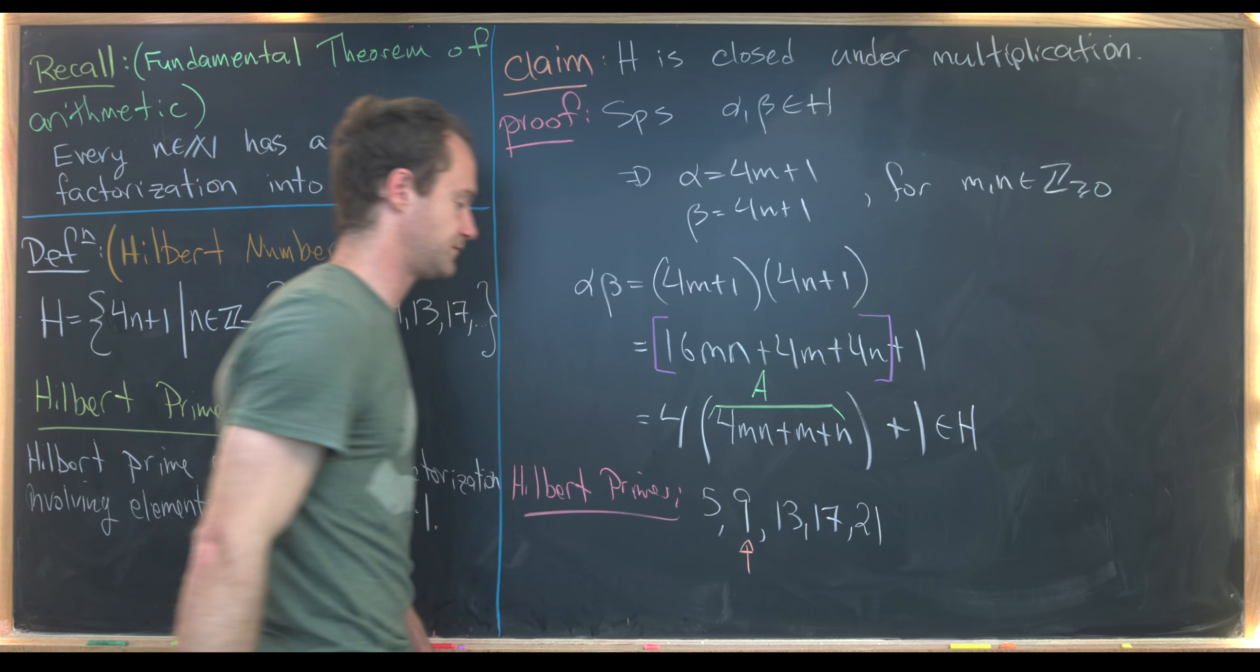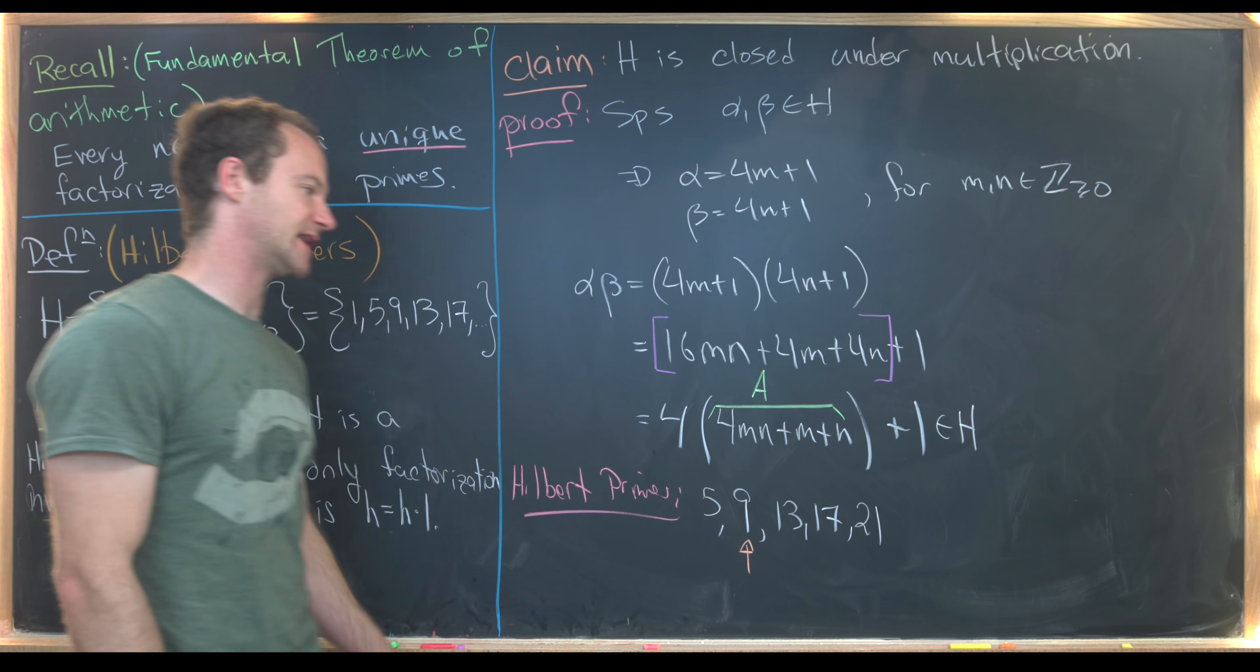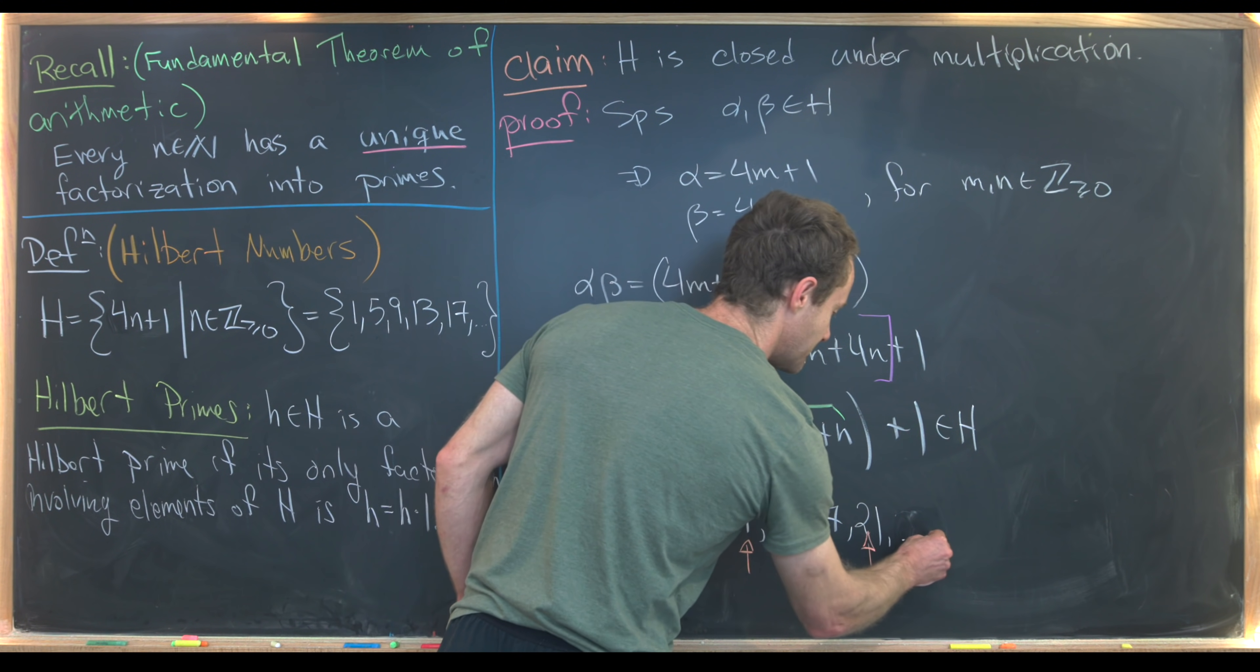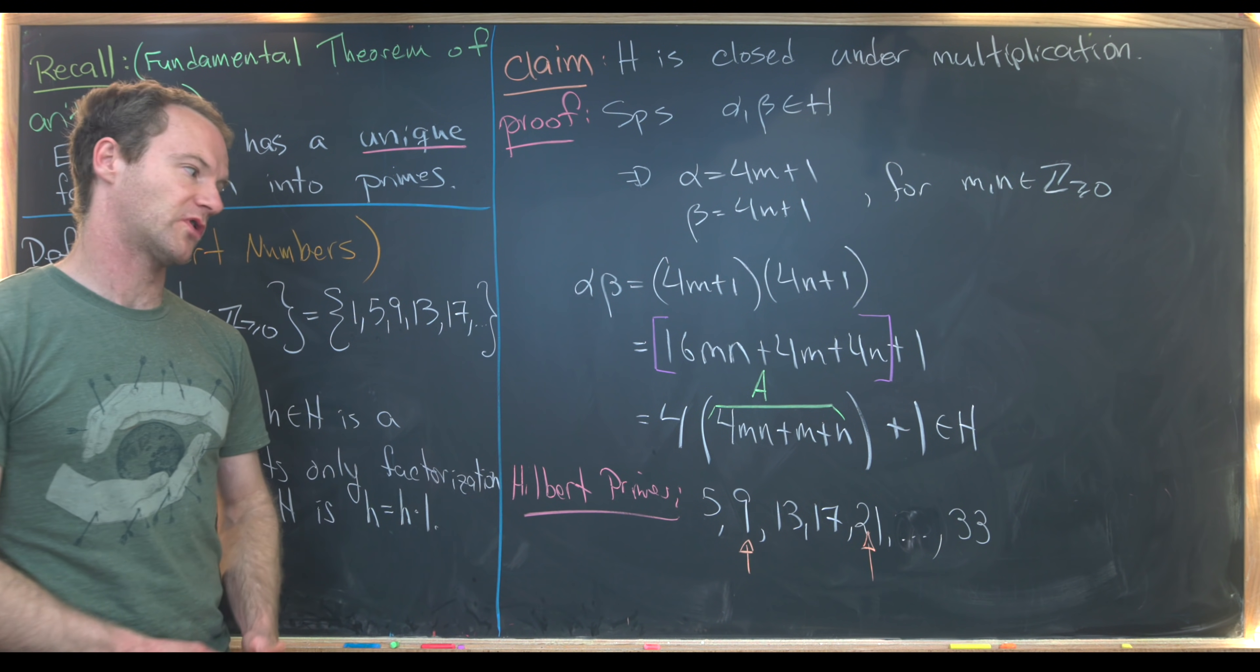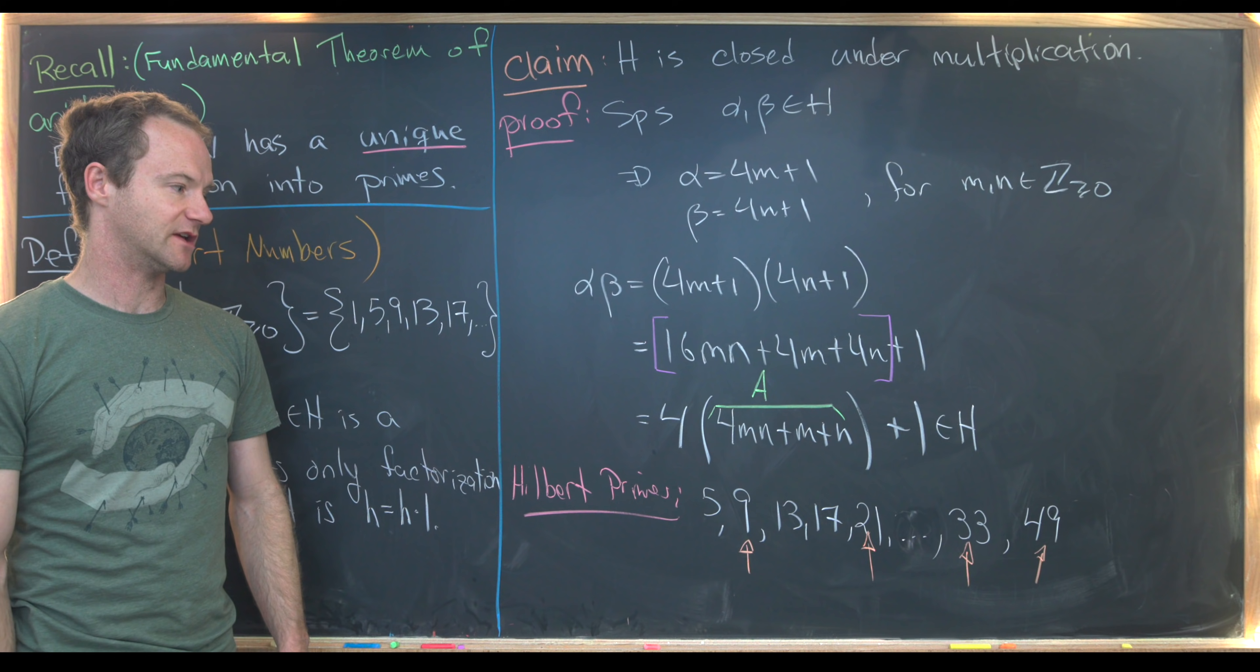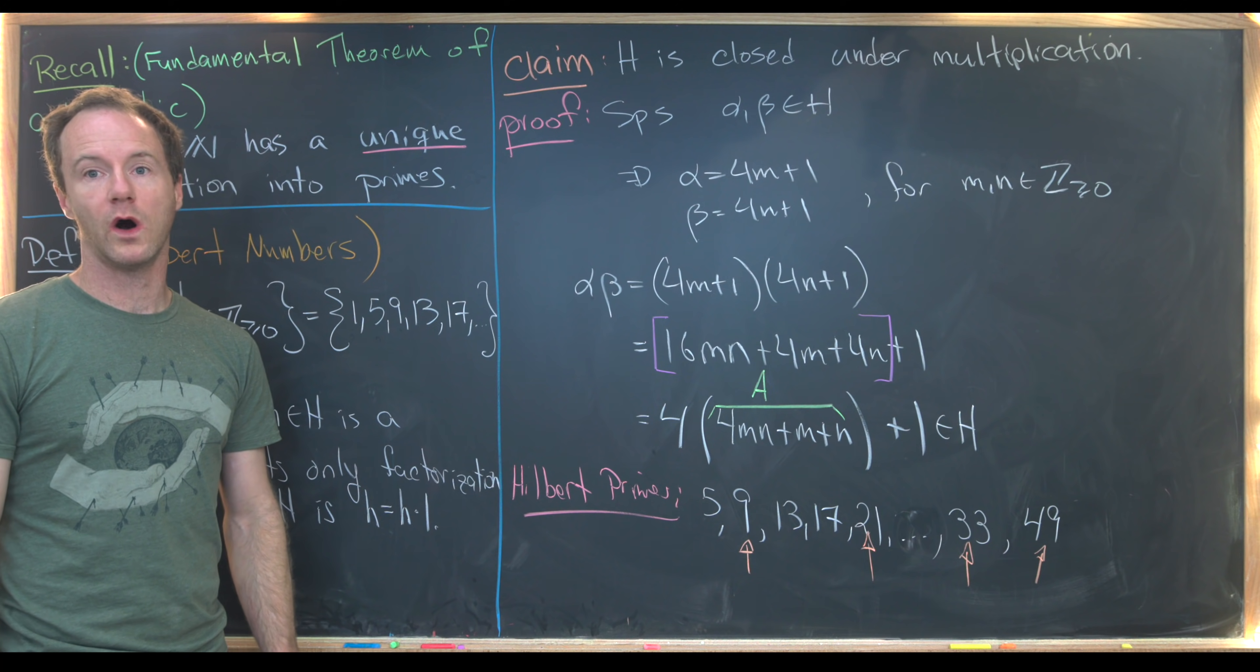And then after that, we'll have 21. Notice that's a Hilbert number, it's 20 plus 1, but this is equal to 3 times 7. 3 times 7 are regular primes, but not Hilbert primes. So that makes this another interesting type of Hilbert prime in that it is not a regular prime. So maybe I'll skip some, but I do want to point out that 33 is a Hilbert prime, that's 3 times 11. That's not a normal prime, but it is a Hilbert prime. And then maybe lastly, let's say 49. Notice that that is 7 squared. That's not a normal prime, but it is a Hilbert prime. So maybe as an exercise, fill in the rest of the Hilbert primes and post in the comments: are there more Hilbert primes or regular primes between 1 and 100?